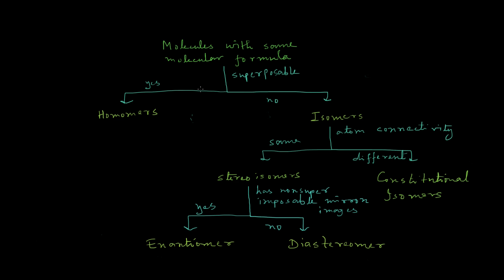The concept of isomers comes into play when two molecules have the same molecular formula. If two molecules with the same molecular formula are superposable, then they are called homomers. If they are not superposable, then they are basically isomers. Superposable simply means the two molecules are identical — for example, these two molecules shown here are the same, so they are superposable.